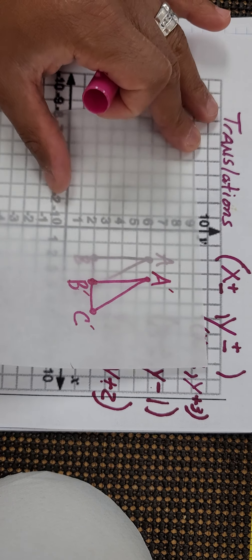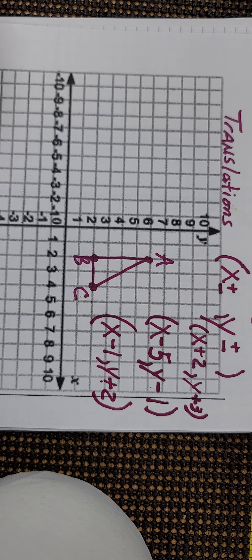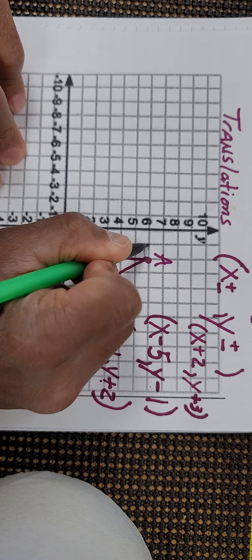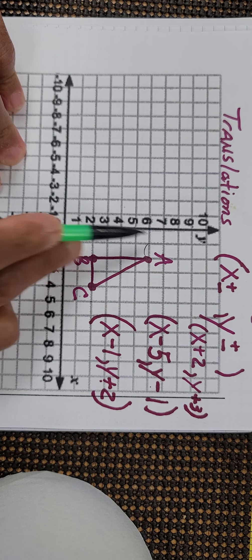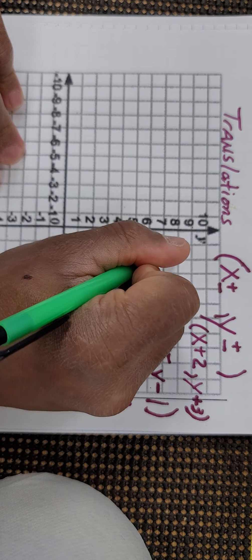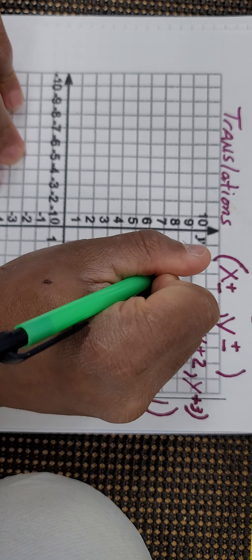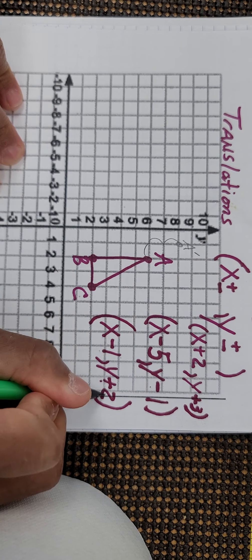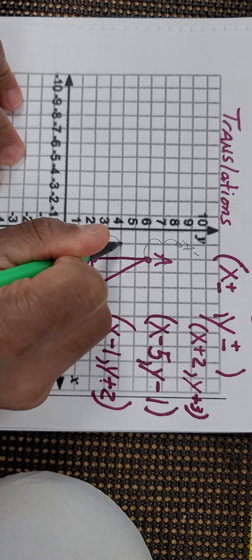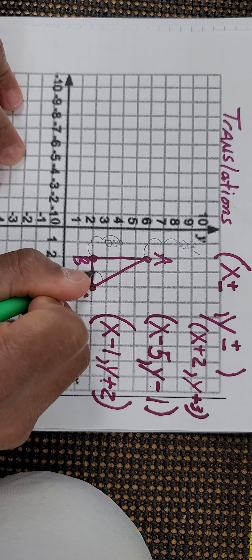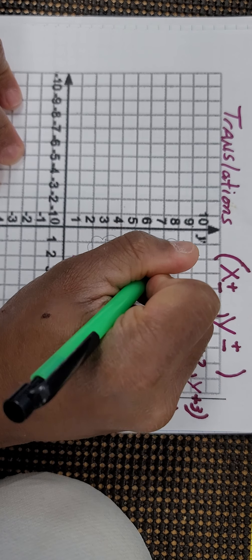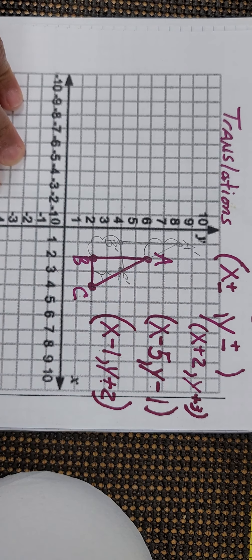I'm using what we call patty paper here. If you don't have patty paper, remember we can simply do this by hand. By hand, I would go to the left one time, then move each point the same amount — up two times. Here it will be my A prime. I'm going to do the same thing for B: go to the left once, up two. And for C: left once, then up two. This will be my triangle A prime B prime C prime.